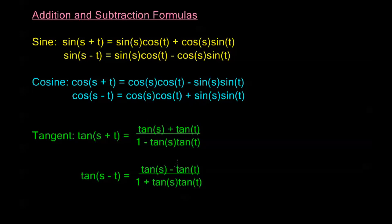For tangent, both formulas for s plus t and s minus t look fairly similar — the only difference is the sign. We always have two different signs: either plus on top and minus on bottom, or minus on top and plus on bottom. You can take a lead from the argument on the left: if we have s plus t, we have positive on top; s minus t means negative on top. The bottom sign is always the opposite of the top. Make sure to come up with your own ways of remembering this.